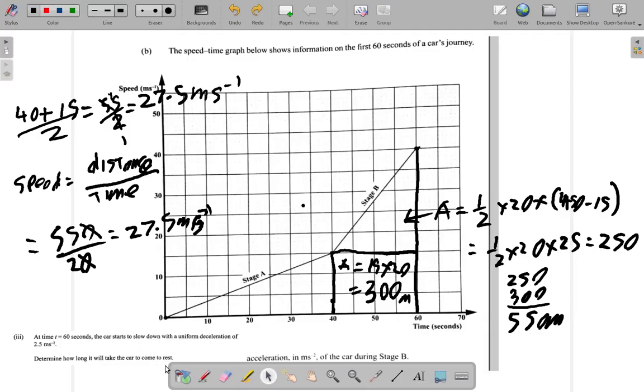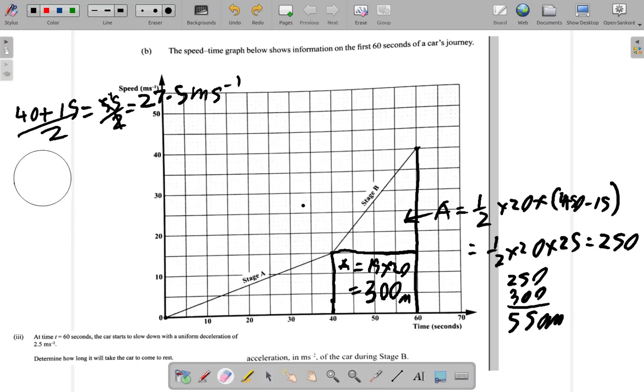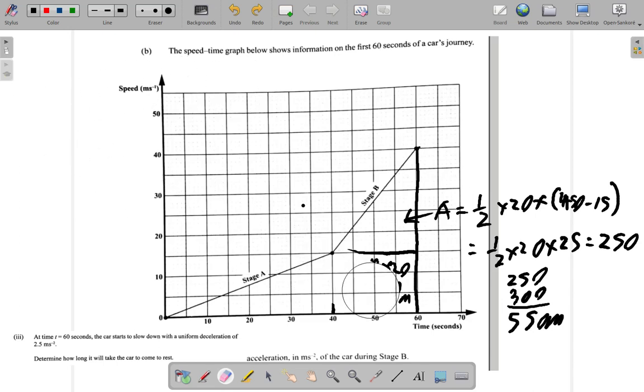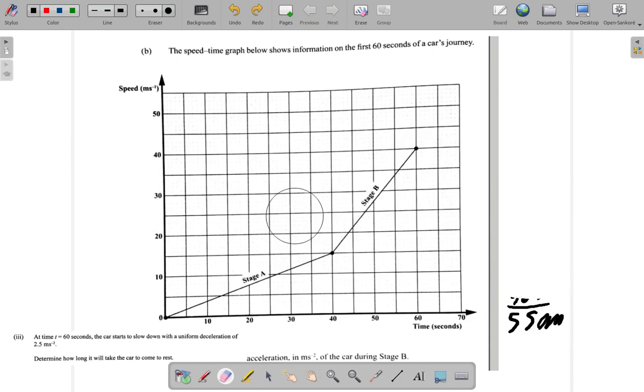Okay, Part 3. Let me erase the rough work here first. Alright, Part 3 says: At time t equals 60 seconds, the car starts to slow down with a uniform deceleration of 2.5 meters per second squared. Determine how long it will take the car to come to rest.